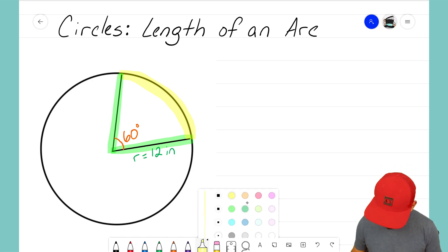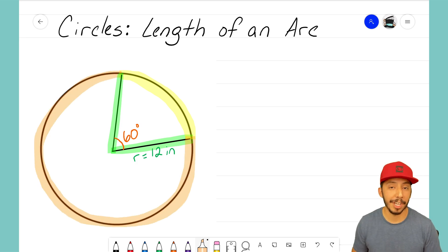We want to find out how long that is. Well, what's going to be really helpful for us is that that arc is part of the entire circumference. So if I can find the circumference of the entire circle, I think it's going to help us find the length of that arc. So let's go ahead and try that out.